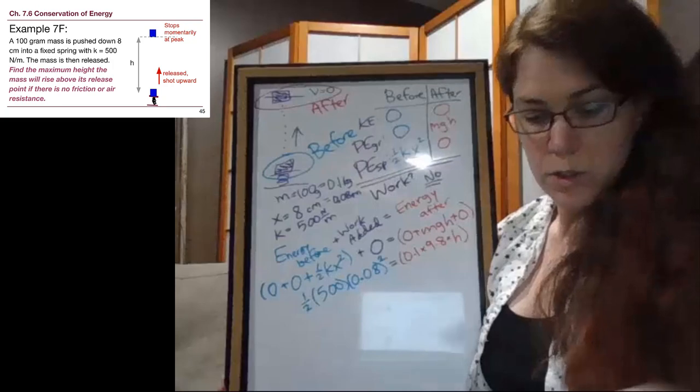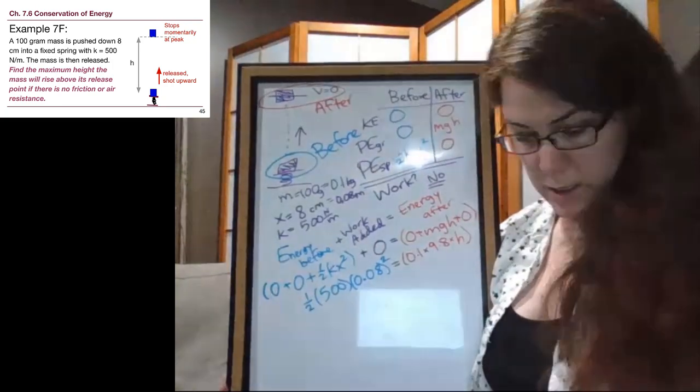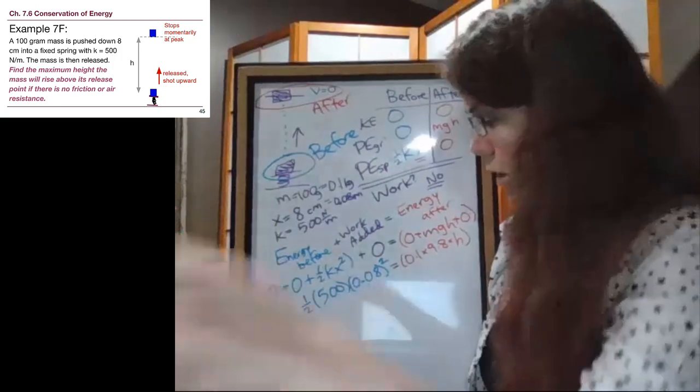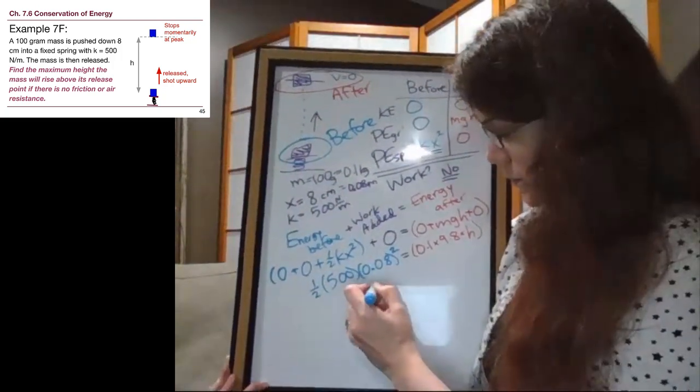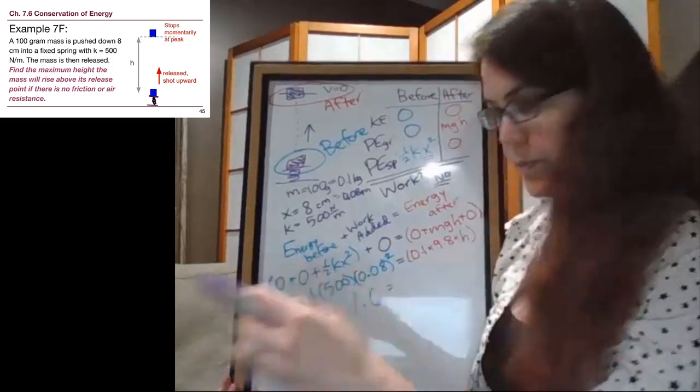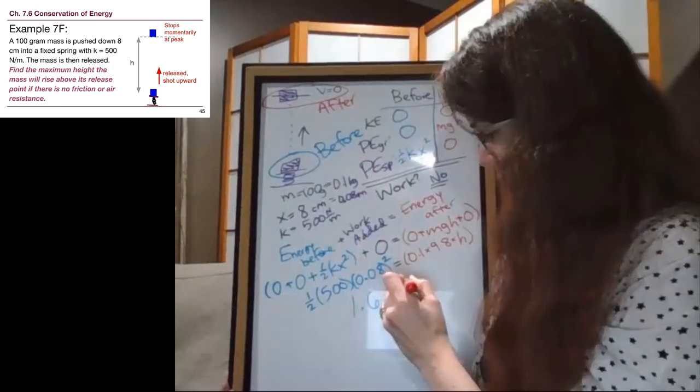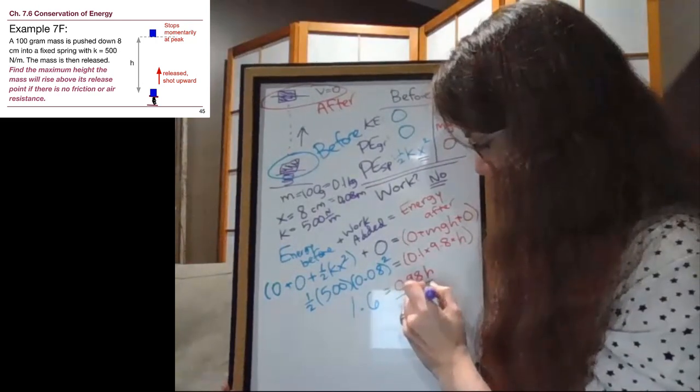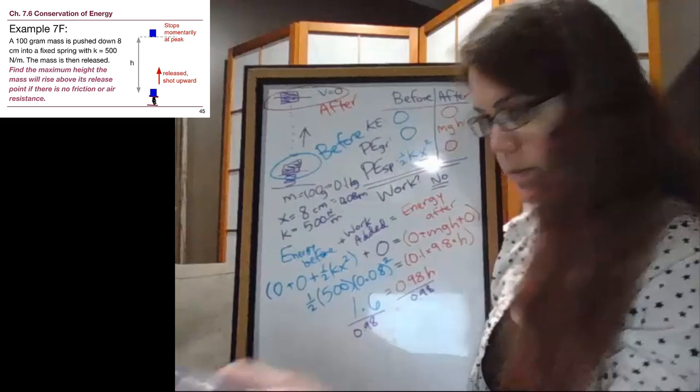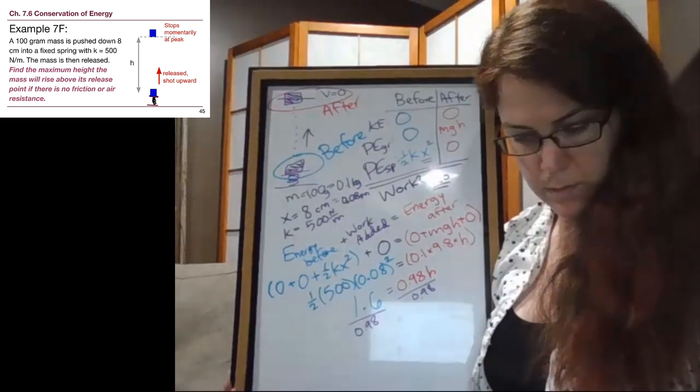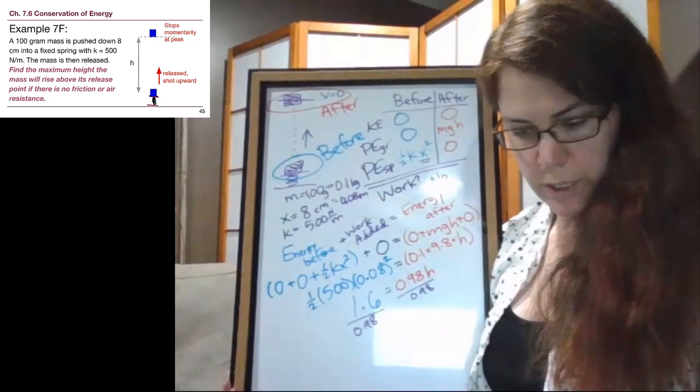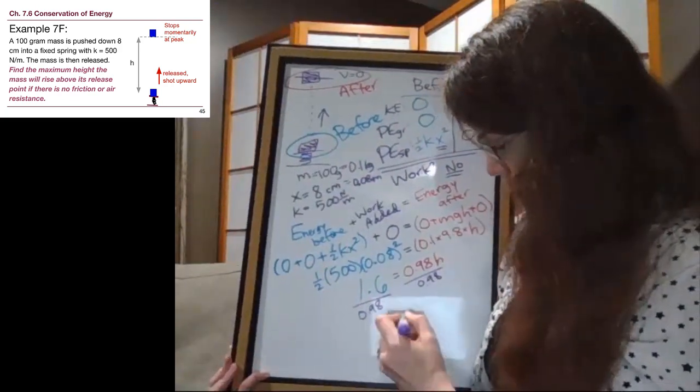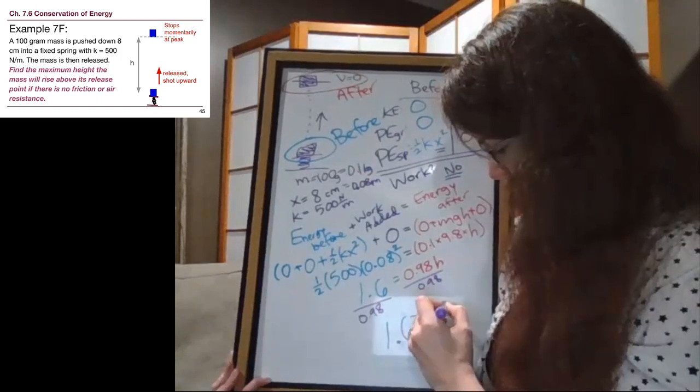So we can plug in the numbers on the left side. And don't forget to square it. So on the left side we have 1.6. And on the right side, we have 0.98 h. So we can divide both sides by 0.98. And so when we have 1.6 divided by 0.98, we're going to get 1.63. So 1.63 meters is our height.